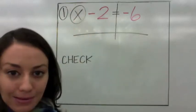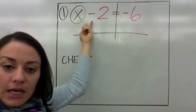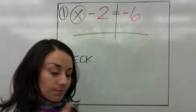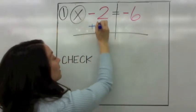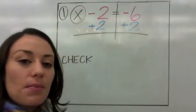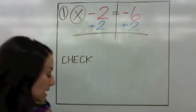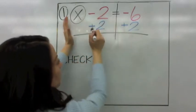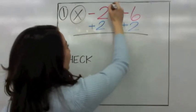I circled x. So what number is next to it? It's negative 2. Then you ask yourself, what is the opposite of negative 2? It is positive 2. So we're going to add 2 to both sides of the equation. I make the positive numbers blue and the negative numbers red. On this side of the equation, negative 2 and positive 2 make 0.